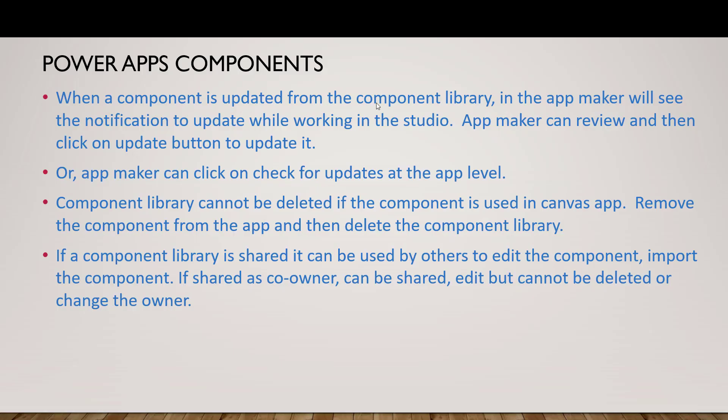When a component is updated from the component library, the app maker will see a notification to update while working in the studio. The app maker can review and then click the 'Update' button. So if there is a change to update the header in your 15 apps, you update the component in the library, open each app in the studio, and you'll see an option to update — no need to make all the changes manually.